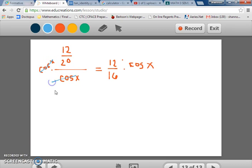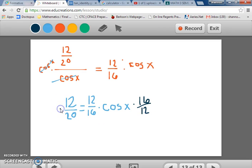When I multiply it by both sides, cosine is going to cancel over here and I'll be left with it. So I end up with 12 over 20 equals 12 over 16 times the cosine of x. I need to get the cosine of x by itself, so I'm going to multiply by the reciprocal of 12 over 16 so that it will cancel out. I cannot just multiply by the reciprocal. I need to do the same thing to both sides of the equation. So I should multiply by 16 over 12 on both sides.